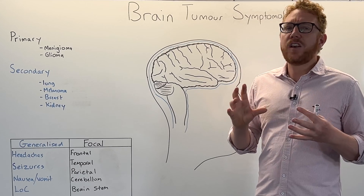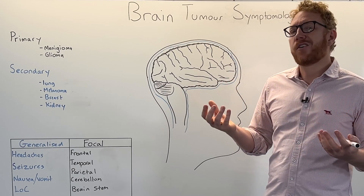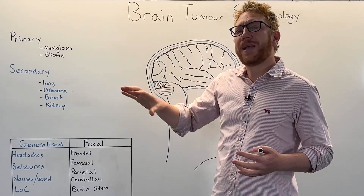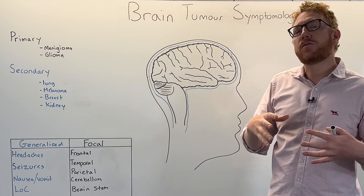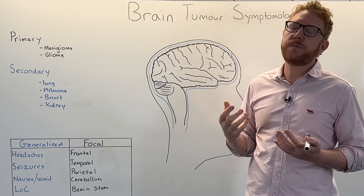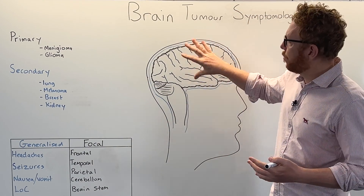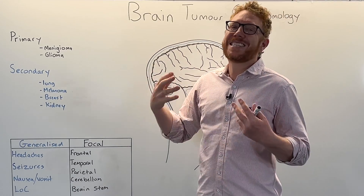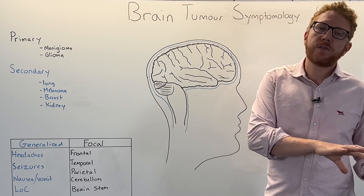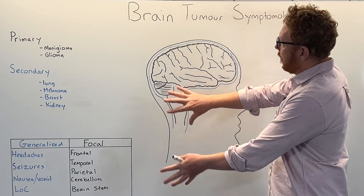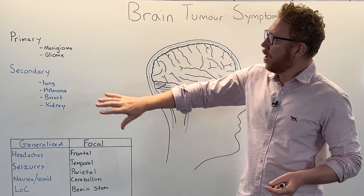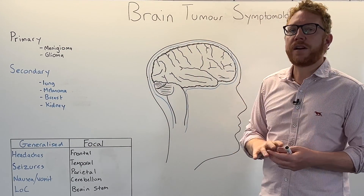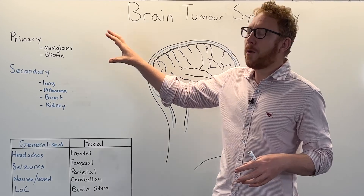An easier way to categorise brain tumours is as primary or secondary. A primary brain tumour means the cells originated within the central nervous system - so that's the brain or spinal cord. Secondary or metastatic tumours came from somewhere else in the body and moved into the brain. Primary brain tumours, which originate in the brain itself, are more common in children.